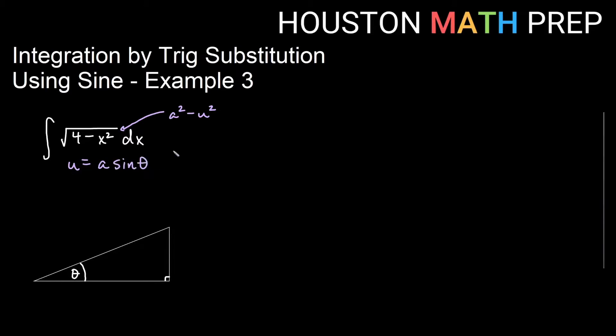In this case, we should notice that a is equal to 2, 2 squared is 4, and u is equal to x. So my actual substitution will be that x is equal to 2 sine of theta.